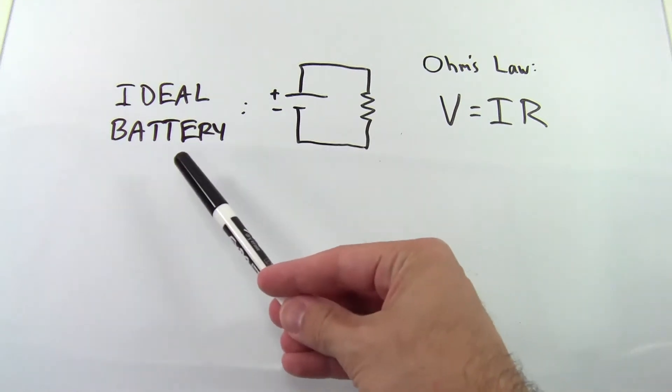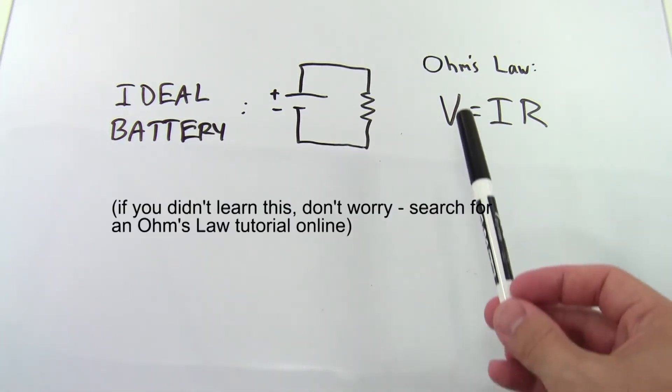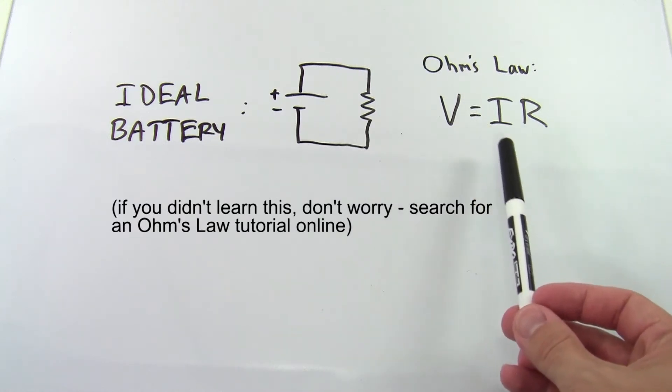Let's start by looking at the case of the ideal battery that you probably learned about in physics class. You should remember Ohm's law, V equals IR, or voltage equals current times resistance.